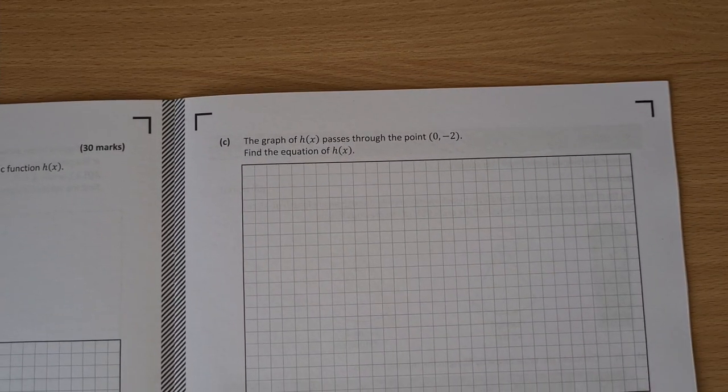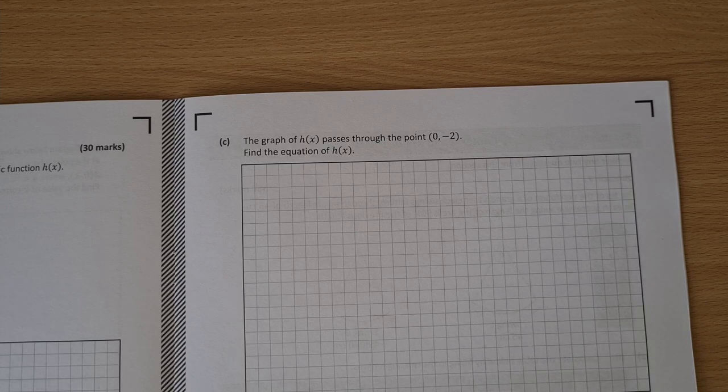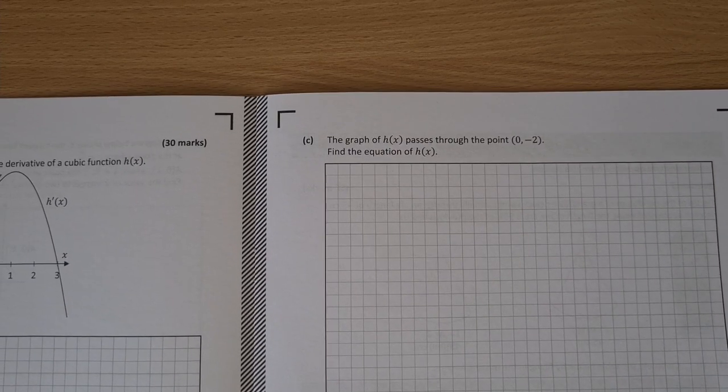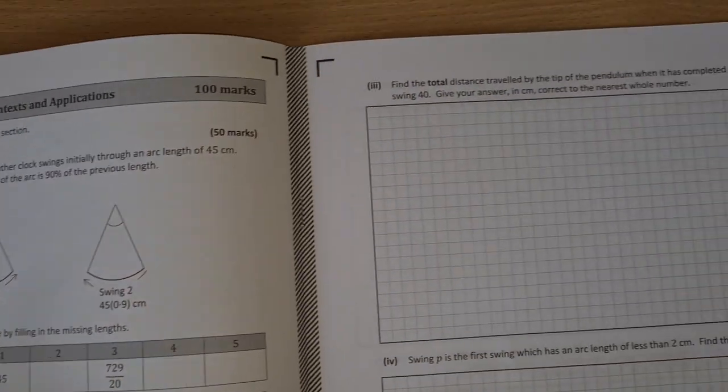The graph passes through the point 0 minus 2. Find the equation of h of x. So find the original equation I suppose, or the original function. A bit of integration on that. And then you have a point on it as well. So that was section A.